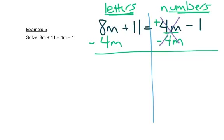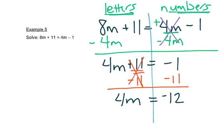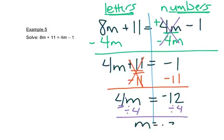8m minus 4m leaves 4m. And we still have plus 11 and minus 1. Now the left side has plus 11 — it doesn't have a letter, but it's on the letter side, so I need it to be gone. So it's a plus 11, so I'll write minus 11 on both sides. That will cancel out and leaves me with 4m on the left and negative 12 on the right. Now I need to get rid of the number in front of the m — that's always the last step. It's multiplication, so we divide by 4, and we get m equals negative 3.